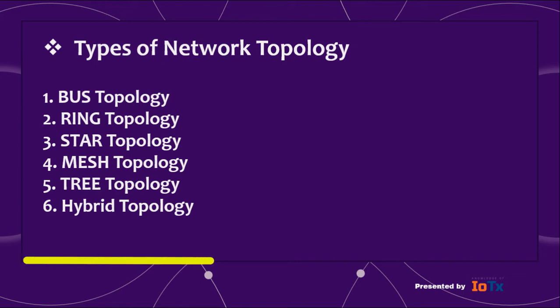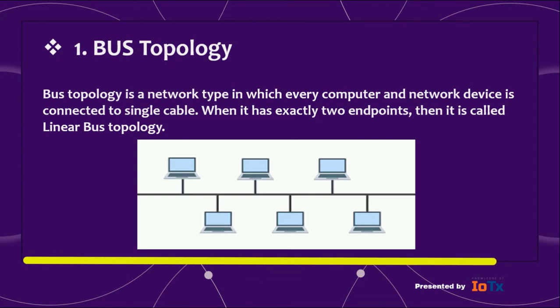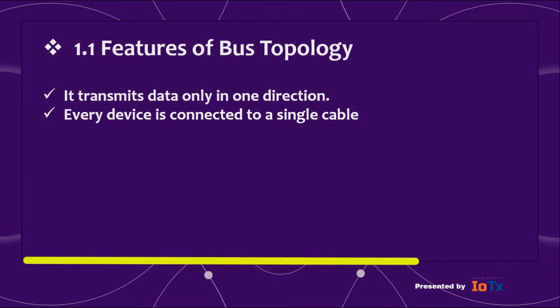Number one: bus topology. Bus topology is a network type in which every computer and network device is connected to a single cable. When it has exactly two endpoints, it is called linear bus topology. Features: it transmits data only in one direction, and every device is connected to a single cable.